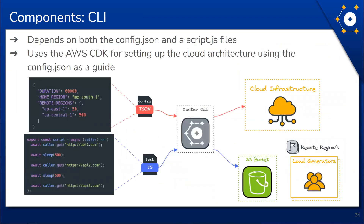Interacting with the Constellation framework requires the locally installed CLI application and two user-generated files: the configuration file and the test script file. The configuration file is used to determine the number of VUs and the number of regions the infrastructure needs to accommodate. The test script is responsible for the details of the user behavior to simulate, and is uploaded to an S3 bucket to be later used by the load generators. Once the user has created the configuration file and the test script, they can initialize infrastructure and execute the test.